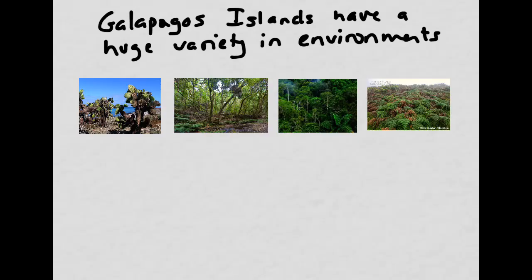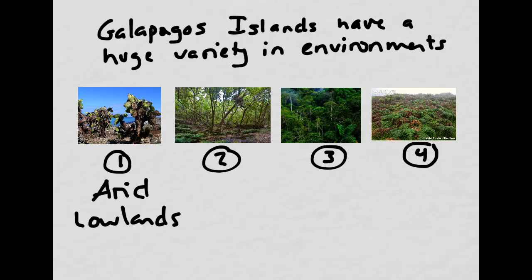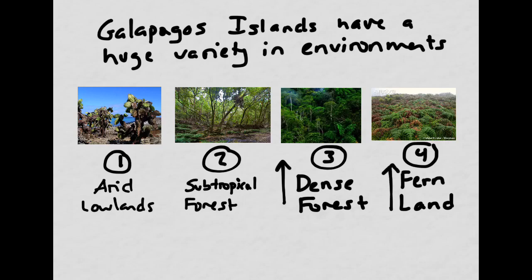One of the things that makes the Galapagos such an interesting environment for studying evolution is that it has four distinct types of ecosystems. Environment one is the arid lowlands — pretty dry, not far above sea level, with small shrubs and cacti. Environment two is a subtropical forest with lots of trees, a little less dry. Environment three is at much higher elevation, cooler and more moist, with trees closely packed together. Lastly, there are high elevated areas with lots of ferns, also cooler and less dry.